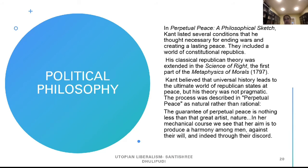In Perpetual Peace, a philosophical inquiry, Kant listed several conditions he thought necessary for ending wars and creating a lasting peace, including a world of constitutional republics. Kant believed that universal history leads to the ultimate world of republican states at peace, but his theory was not pragmatic. The process was described in Perpetual Peace as natural rather than rational: 'The guarantee of perpetual peace is nothing less than the great artist Nature in her mechanical course, whose aim is to produce harmony among men against their will and indeed by their discord.'